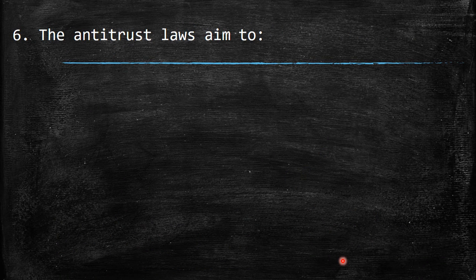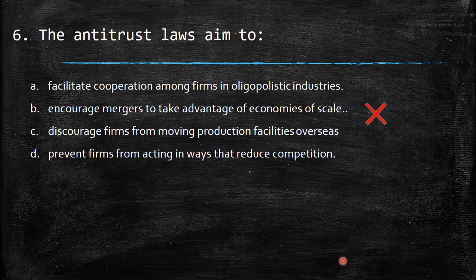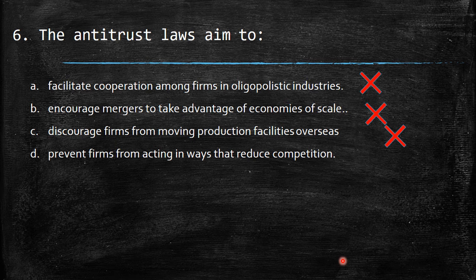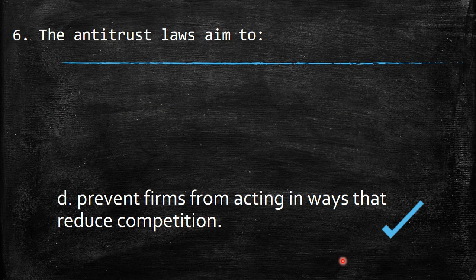The last question: the antitrust laws aim to... Option A — 'encourage mergers to take advantage of economies of scale' — is wrong; antitrust laws are the opposite of promoting market power. Option B — 'discourage firms from moving production facilities overseas' — is not what antitrust laws are about. Option C — 'facilitate cooperation among firms in oligopolistic industries' — is wrong; facilitating cooperation leads to cartels with higher prices and lower quantities. The correct answer is D: prevent firms from acting in ways that reduce competition.